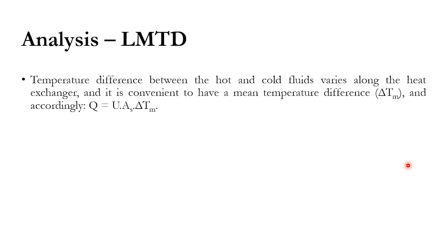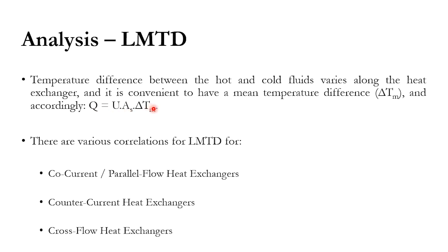The temperature difference between the hot and cold fluids varies along the length of the heat exchanger. The hot stream enters and exits, the cold stream enters and exits, and at each point along the heat exchanger length there is a different delta T between the hot and cold streams. Accordingly, we take a mean temperature difference and the correlation becomes Q = U·As·ΔTm. There are various LMTD correlations for co-current (parallel flow), counter-current, cross-flow, and multi-pass heat exchangers.